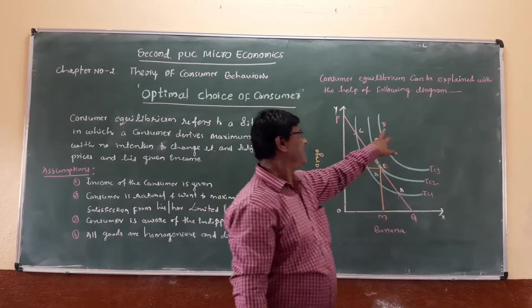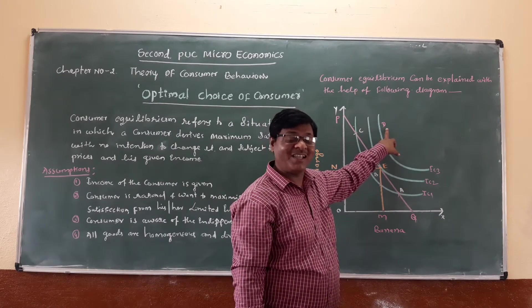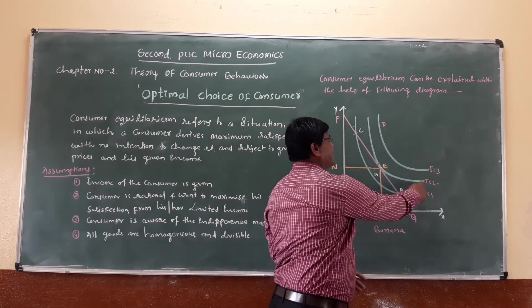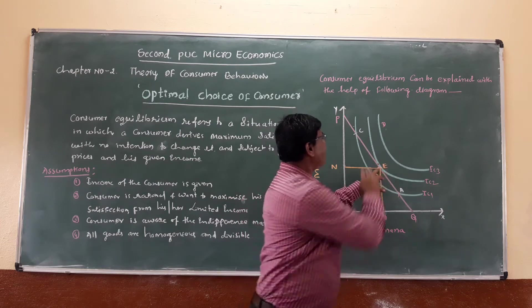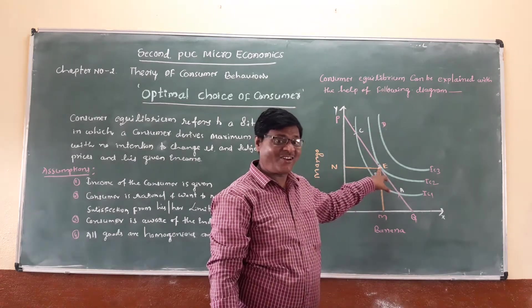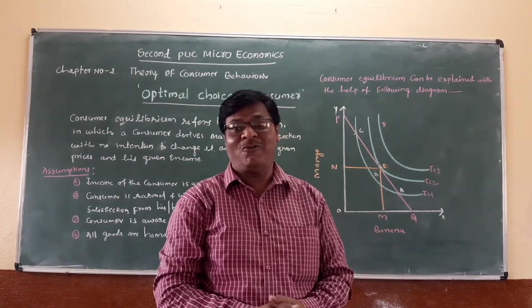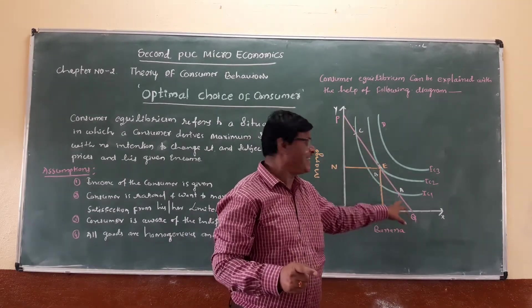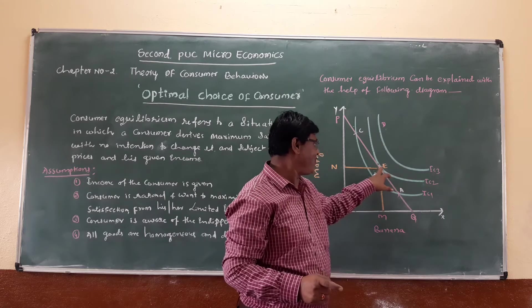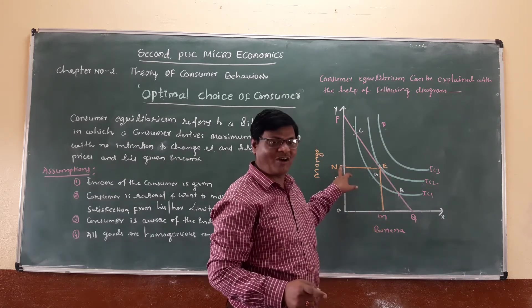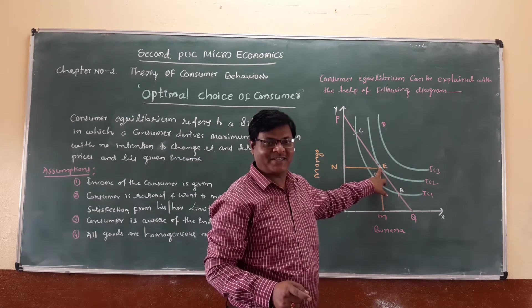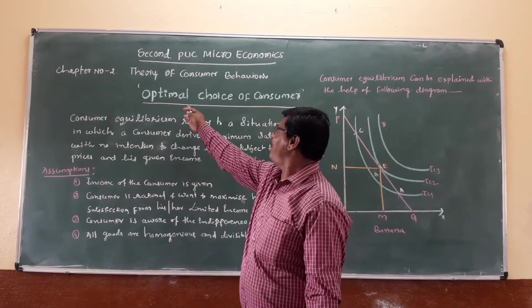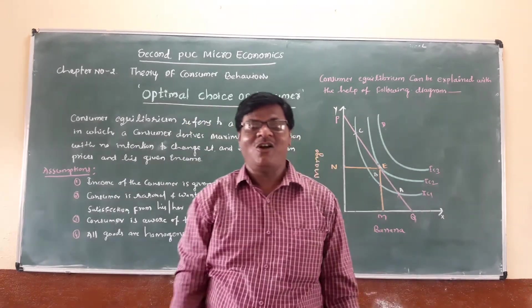Point D is also not considered the optimal choice of consumers because D is beyond the IC2 curve — it is unaffordable given the consumer's income. Only point E is the equilibrium of the consumer, where the price line PQ equals IC2, and the consumer purchases OM amount of banana and OM amount of mango. This is called the optimal choice of consumers.